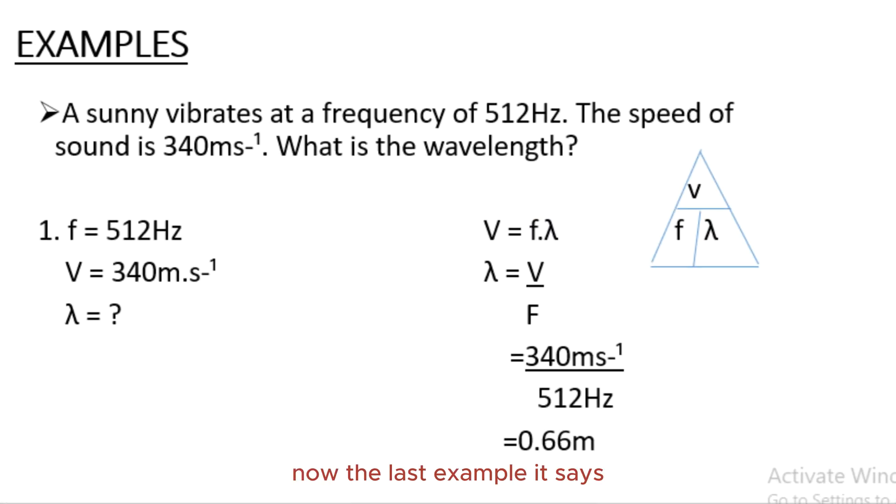Now the last example. A tuning fork vibrates at a frequency of 512Hz. The speed of sound is 340m/s. What is the wavelength? Here our frequency is 512Hz. Our V is given as 340m/s. We don't know the wavelength. To find the wavelength, we use λ = V/f = 340m/s ÷ 512Hz.